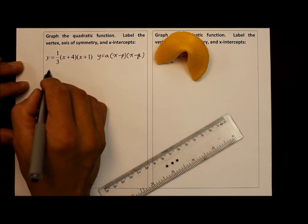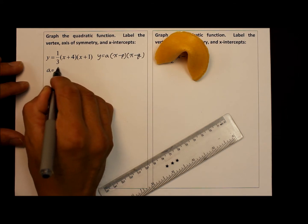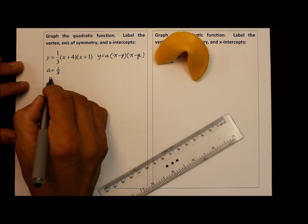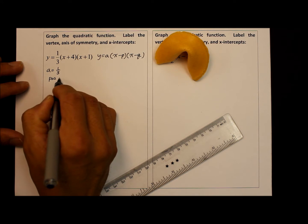First I identify the coefficient a, which is in this case one over three, and since it's positive, we all know that parabola is going to go upward.